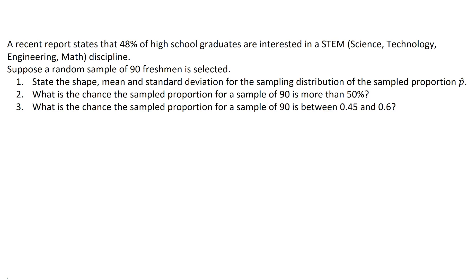In this example, I'll show you how you can apply the central limit theorem to the sample proportion for a single categorical variable. So let's go ahead and read this problem. It says a recent report states that 48% of high school graduates are interested in a STEM discipline. Suppose a random sample of 90 freshmen is selected. Can we state the shape, mean, and standard deviation for the sampling distribution for our random variable, the sampled proportion p-hat?